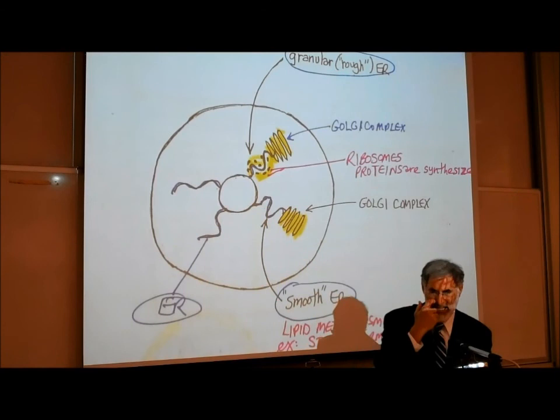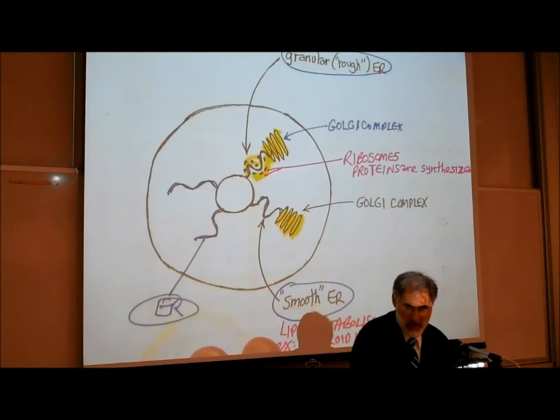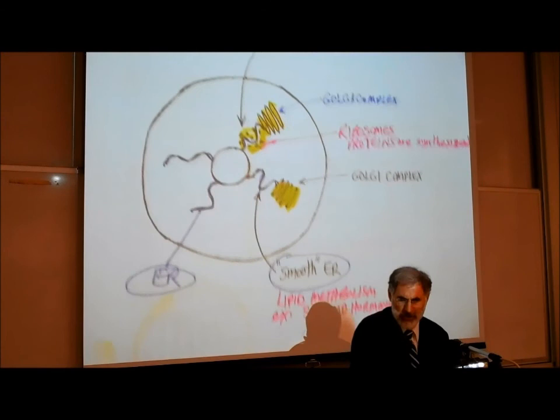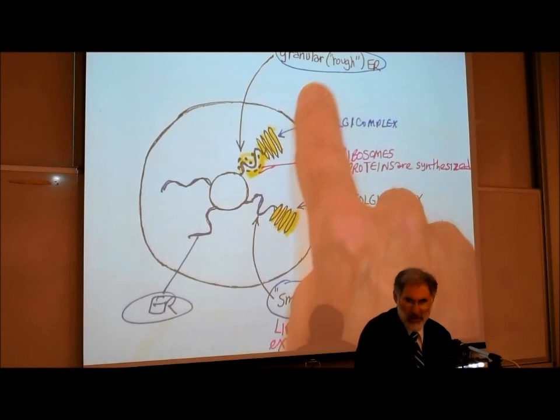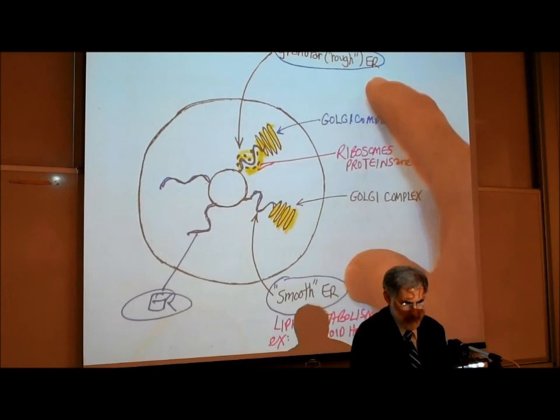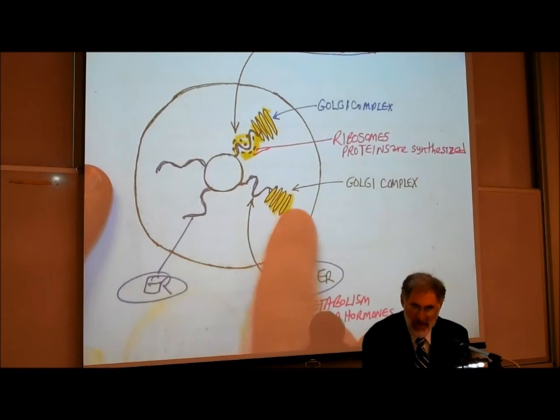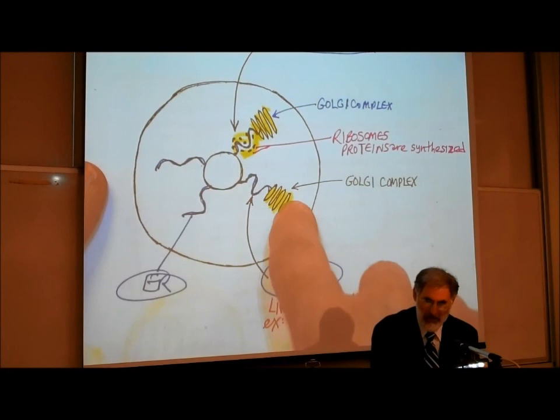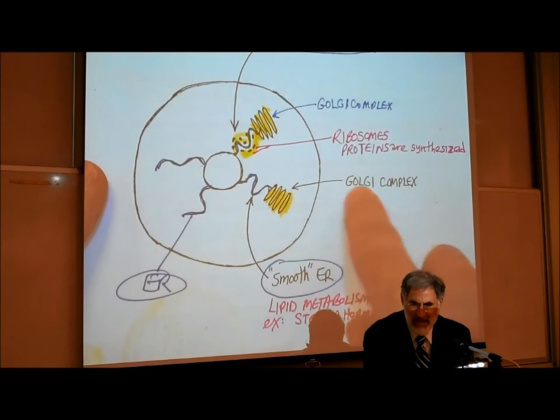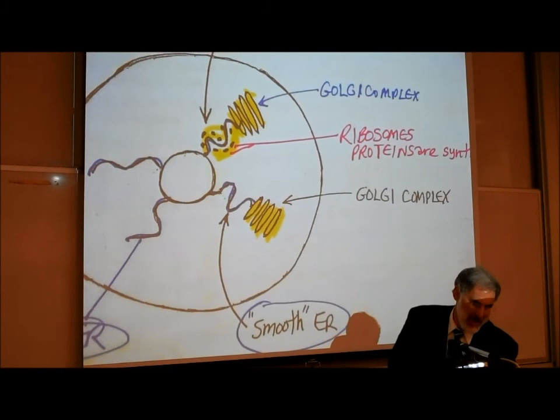There are actually two types of endoplasmic reticulum: smooth ER and granular or rough ER. The smooth ER is called smooth because it's smooth. It's attached to a series of flat sacks that look like pancakes, called the Golgi complex — named after Italian cell biologist Emilio Golgi.